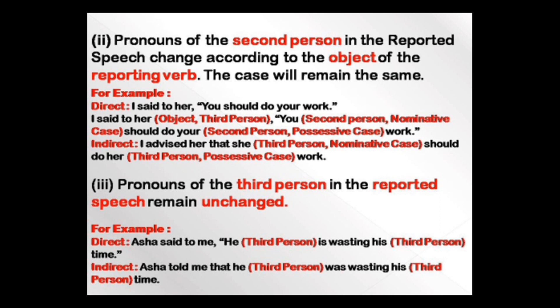Pronouns of the second person in the reported speech change according to the object of the reporting verb. For example: 'I said to her, you should do your work.' 'You' is second person, so it changes according to the object in the reporting verb — which is 'her.' The sentence becomes: 'I advised her that she should do her work.'